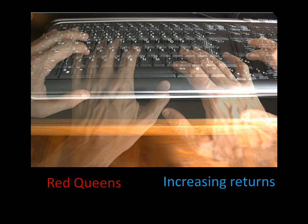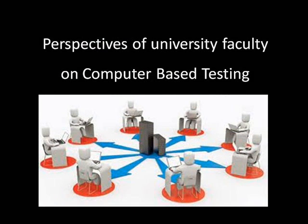The last two forces, Increasing Returns and Red Queens, are factors in computer-based testing in terms of its implementation. Increasing returns may become evident in the area of proctoring. Will computer-based testing be conducted in a centralized testing center, with virtual proctors, or with some yet-to-be-experienced technology to protect academic integrity? Similarly, the Red Queen force is not yet clearly defined. Will computer-based testing occur within commercial learning management systems, for-profit private software, or open-source offerings? These are questions yet to be defined.